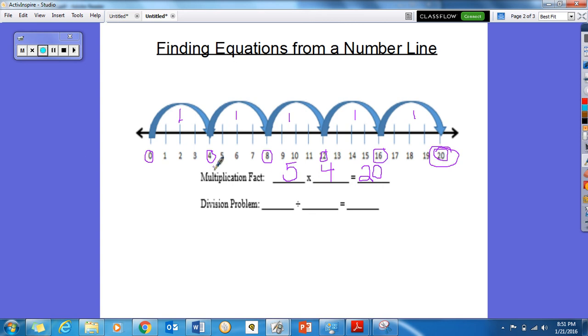Now, if we needed to find a division equation from this problem, we would start with the number that we're dividing by, so 20 divided by what we are skip counting by, so we are skip counting by 4s, equals the number of hops. 1, 2, 3, 4, 5.